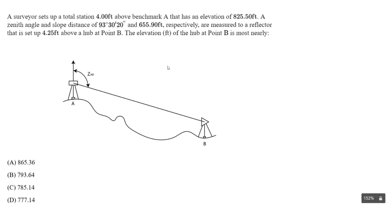Coming back to the question: we have 4 feet above a benchmark at A. This is our benchmark at A and we are 4 feet above it. We know this benchmark has an elevation of 825.50 feet, so the elevation at A is 825.50 feet. We've accounted for the instrument height and the benchmark elevation.